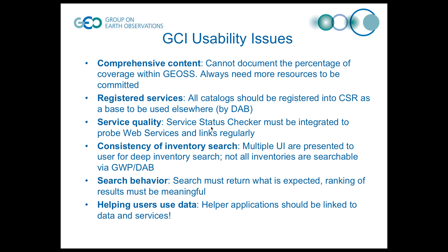We have user interfaces into many of our components, so some people could look at the clearinghouse or CSR and see inventories and results there. But if you go through the DAB and the GEOS web portal, you might see a different set. There is an issue if you come in from a user interface and see different things, so we need to ensure all inventories are searchable through the DAB and presented through the GEOS web portal. We're working on that workflow over the next six months to improve performance. Search must return what's expected, and the ranking of results must be meaningful — the DAB is working toward making this work across multiple collections with different ranking contexts.